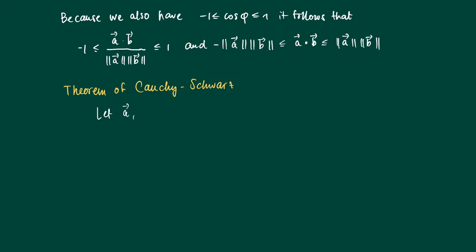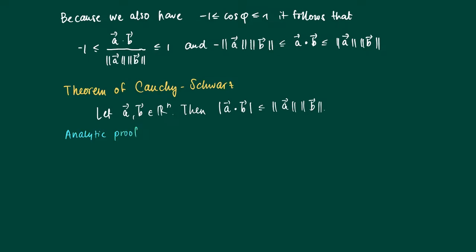Let a and b be vectors in Rn — now we write it more generally, not just the two cases where we apply a cosine rule. Then we have that the absolute value of the inner product of a and b is less than or equal to the product of their lengths. The analytic proof goes as follows; we don't need the cosine rule.